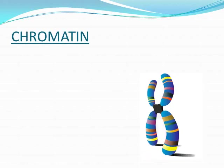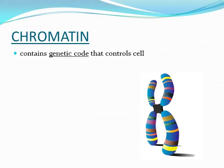Chromatin is the basic genetic material — the genetic code — which controls all the functions of the cell. It is made up of DNA and proteins.